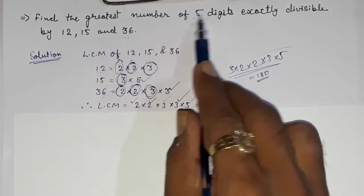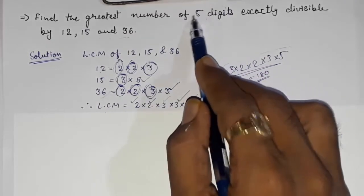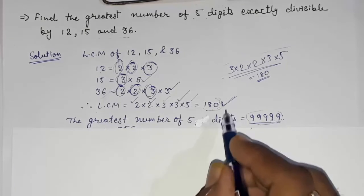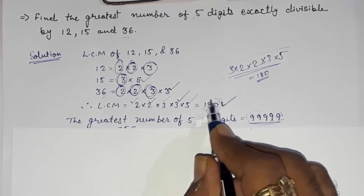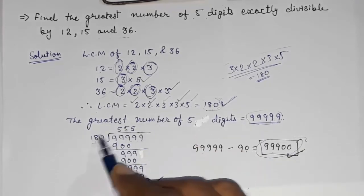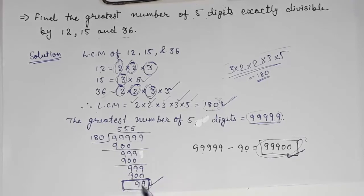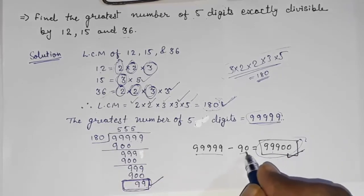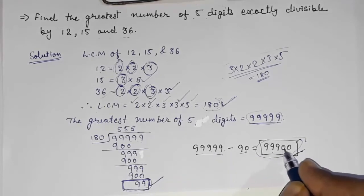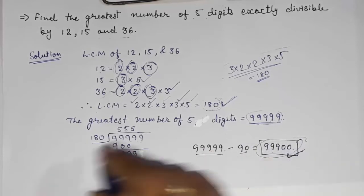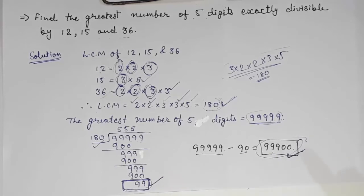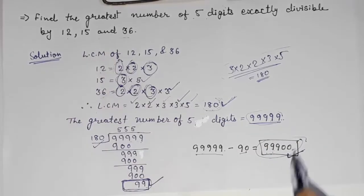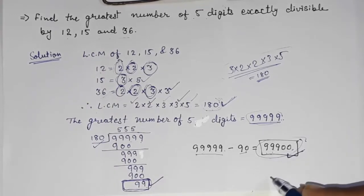The LCM is 180. The greatest five-digit number is 99999. We divide 99999 by 180 and get remainder 99. Subtracting 99 from 99999 gives 99900. So 99900 is exactly divisible by 180, and therefore also exactly divisible by 12, 15, and 36 without any remainder. The answer is 99900.